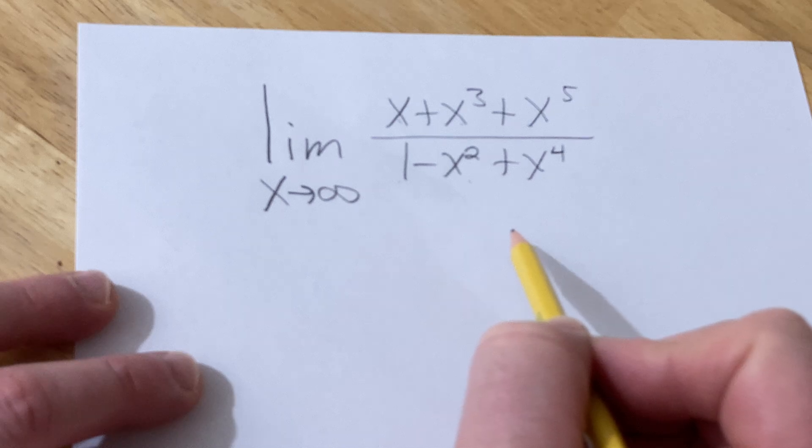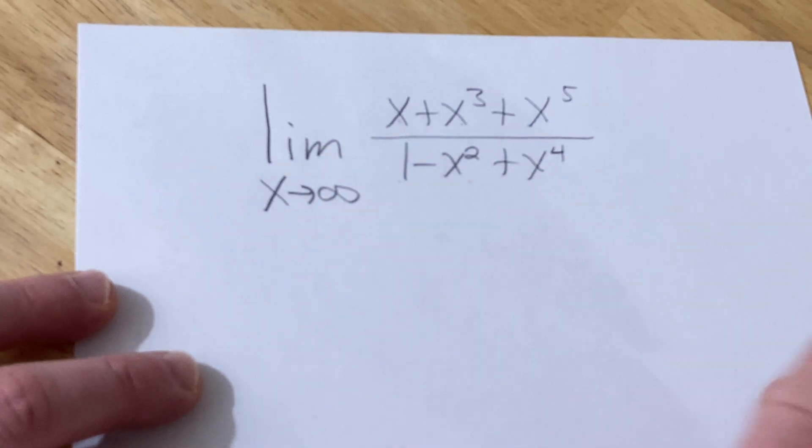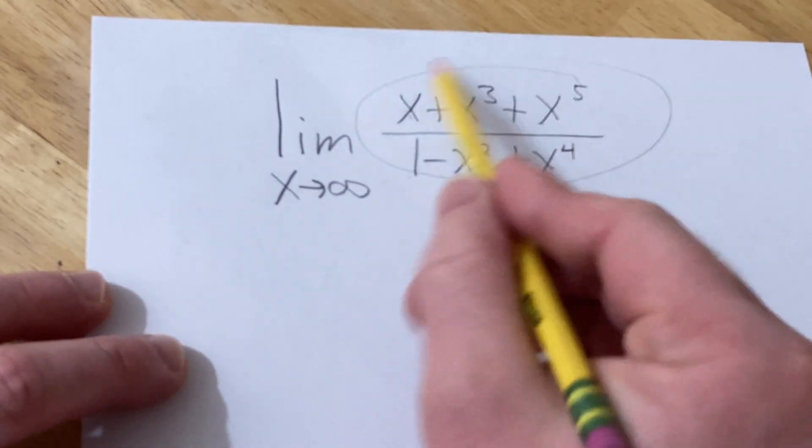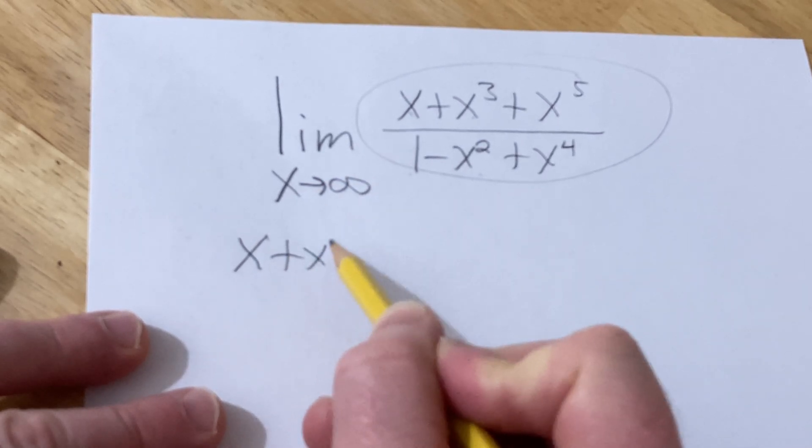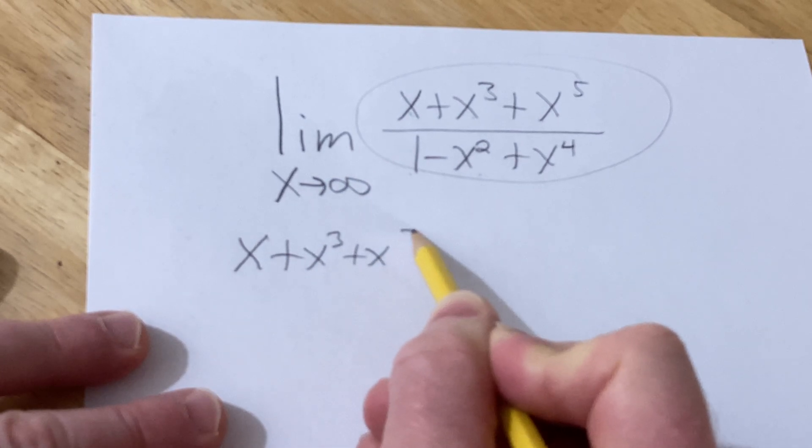And x is getting really, really big. So let's just do this with some intuition. I'm just going to go ahead and write this without the limit, and we're just going to use some intuition here to justify the answer.